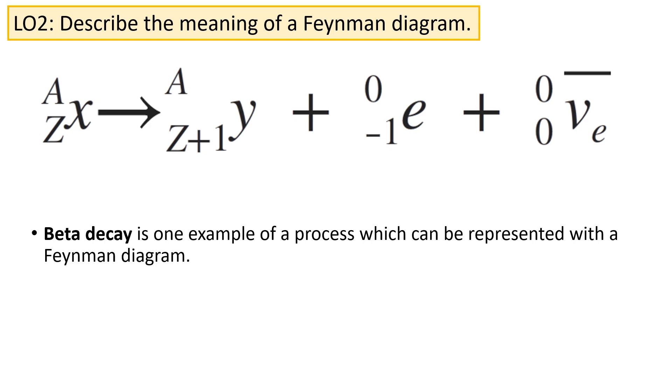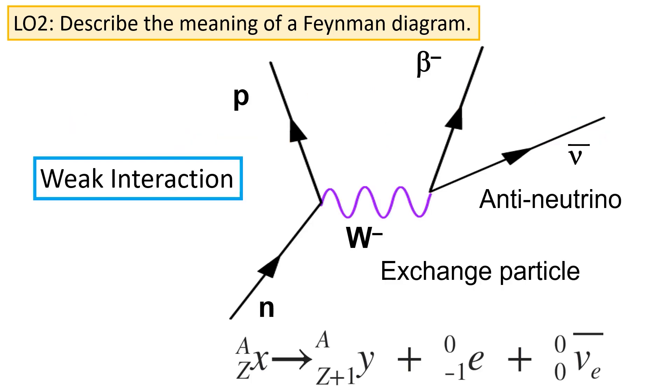Let's look at an example of a process we already know about, beta decay. Beta decay is one example of a process which can be represented with a Feynman diagram. Here's the Feynman diagram for beta decay. We start with a neutron. This neutron decays and changes into a proton.